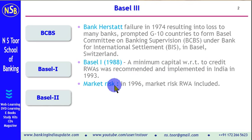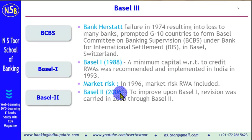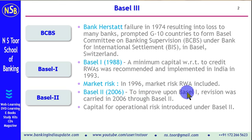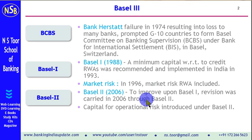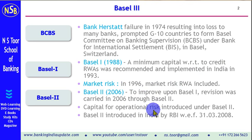Subsequently, Basel II recommendations were given in the year 2006, and this revision was to improve the Basel I recommendations. Here, operational risk was introduced in addition to credit risk and market risk. So banks as per Basel II are required to maintain capital for credit risk, market risk, and also operational risk. Implementation of Basel II recommendations in India was introduced in the year 2008.